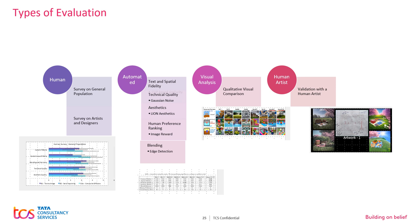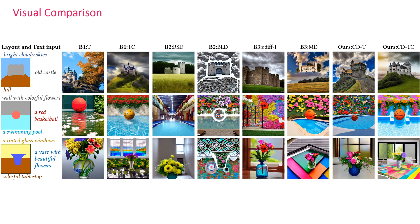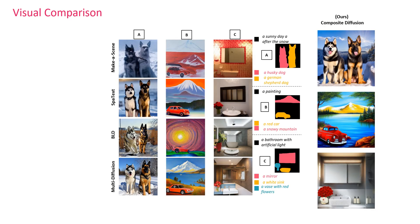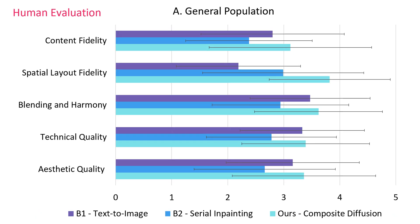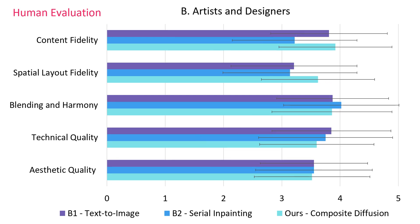We perform different types of evaluations — human surveys, automated methods, visual comparisons — and validate with an artist. Visually, our method shows superior results, particularly for Composite Diffusion (CD) and Composite Diffusion with control conditions. Automated methods confirm this: we achieve the highest scores on content and spatial fidelity, as well as in aesthetics and human preference. Human surveys of the general population show we score highly across all quality parameters, and among artists and designers — who are more discerning — we achieve even greater scores on content and spatial fidelity with comparable scores on other quality dimensions.